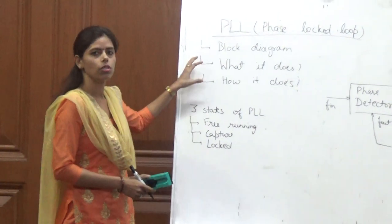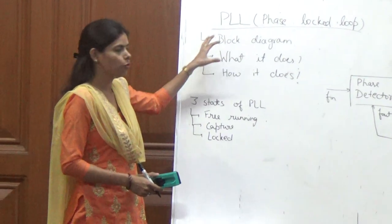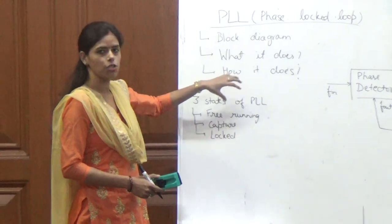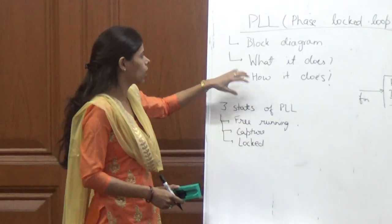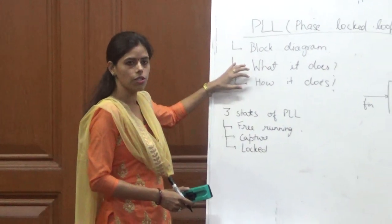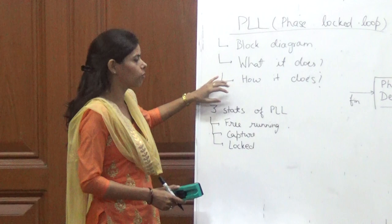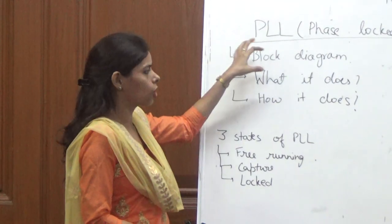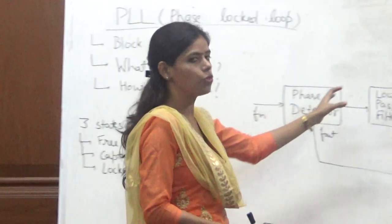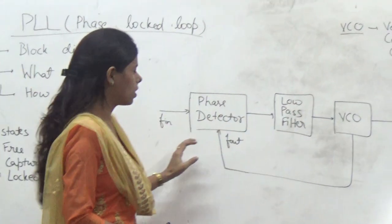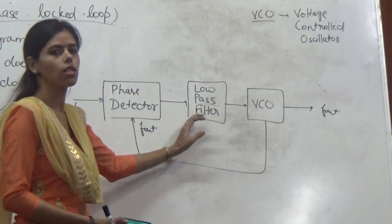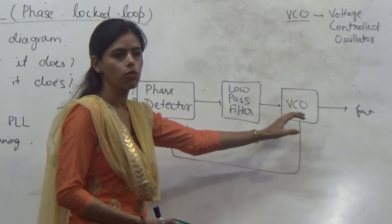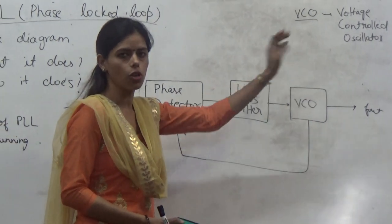Today we will discuss about the PLL, that is Phase-Locked Loop. In this session we will talk about the block diagram, what is the function of PLL and how it performs that function. When we talk about PLL, it consists of basically three blocks: the first block is a phase detector, the second one is a low pass filter, and the third one is the VCO, that is voltage controlled oscillator.